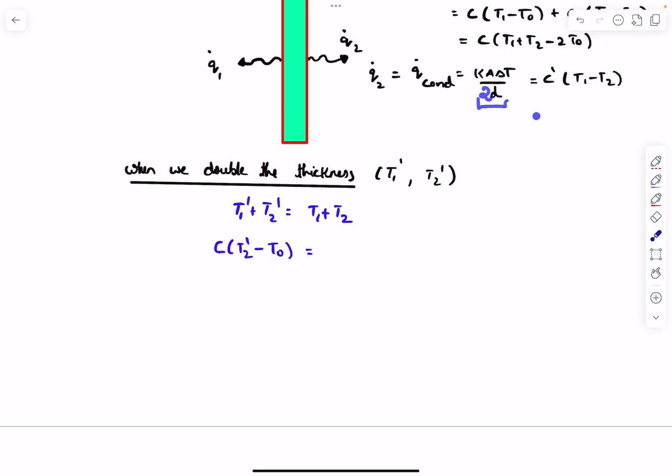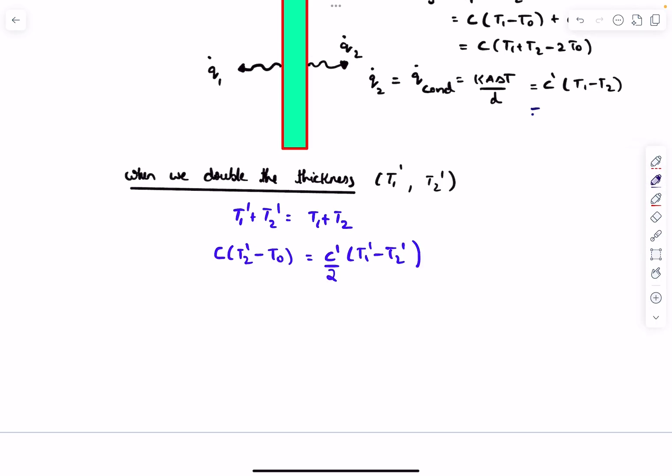For the conduction term, the only difference is that the denominator will become twice because the thickness is now doubled. This will be C dash by two times T1 prime minus T2 prime. Initially, this was also equal to Q2 dot, which was C times T2 minus T naught. From here, we can figure out the value of C prime divided by C.